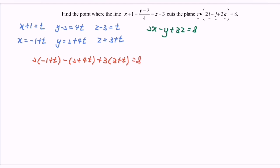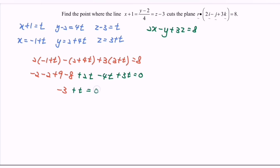Expanding and rearranging: −2 + 2t − 2 − 4t + 9 + 3t = 8. Simplifying the constants: −2 − 2 + 9 = 5, and the t terms: 2t − 4t + 3t = t. So we get 5 + t = 8, which gives t = 3. Substituting t = 3 into the parametric equations: x = −1 + 3 = 2, y = 2 + 12 = 14, z = 3 + 3 = 6.